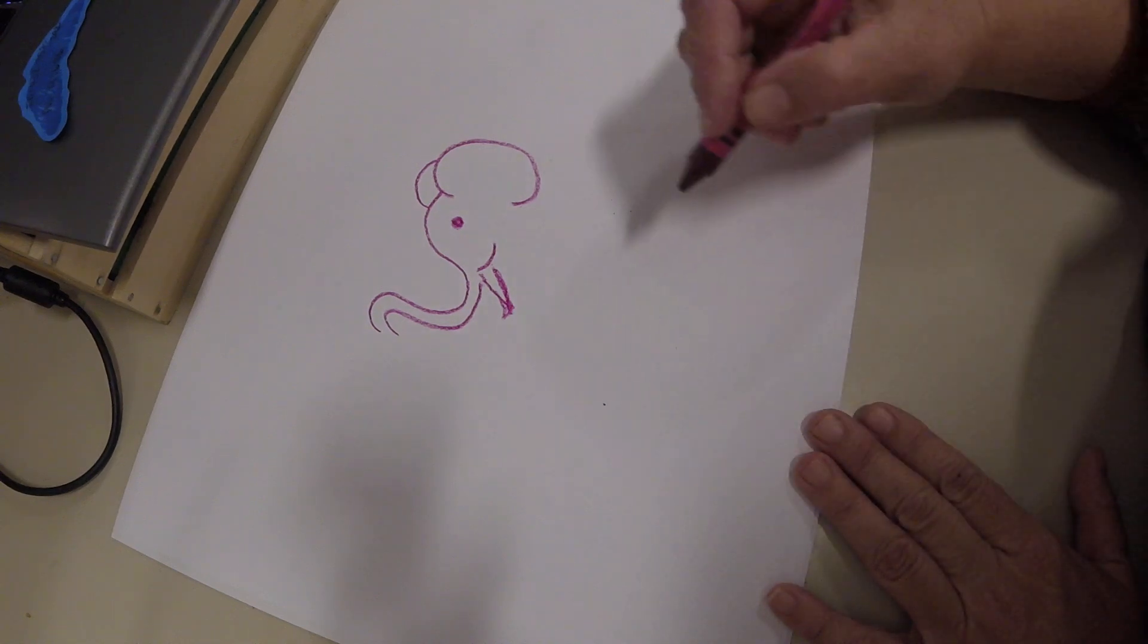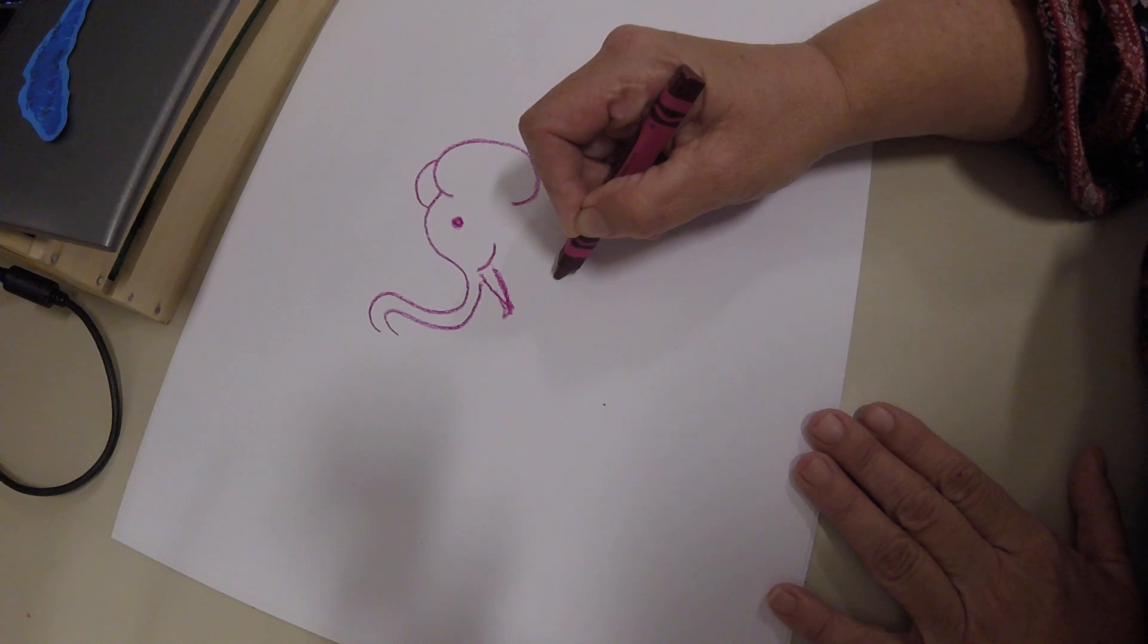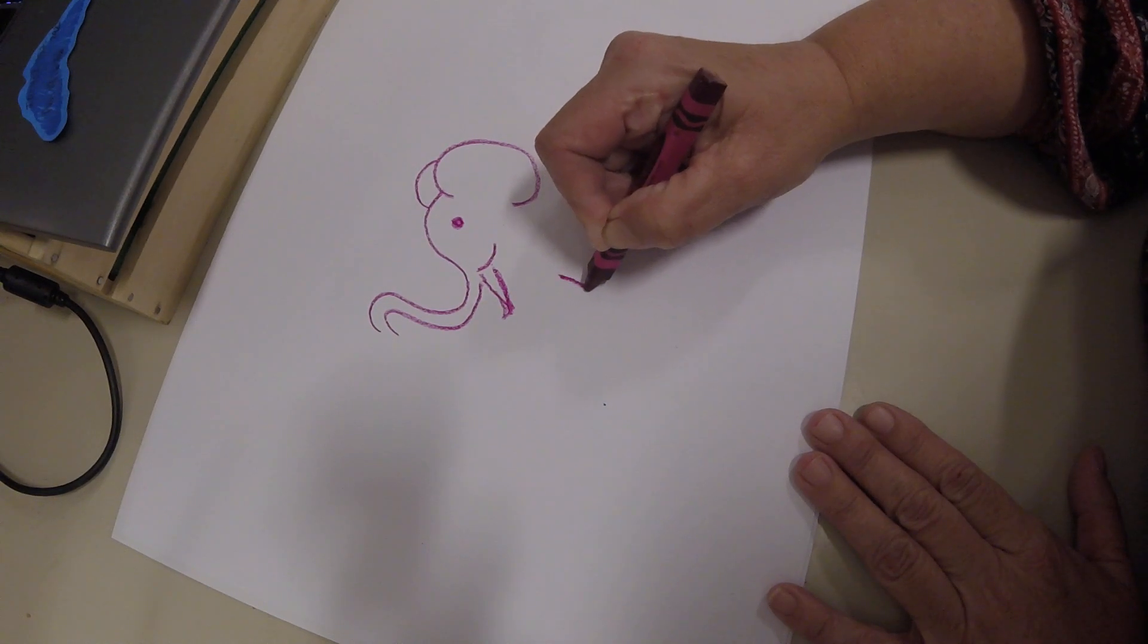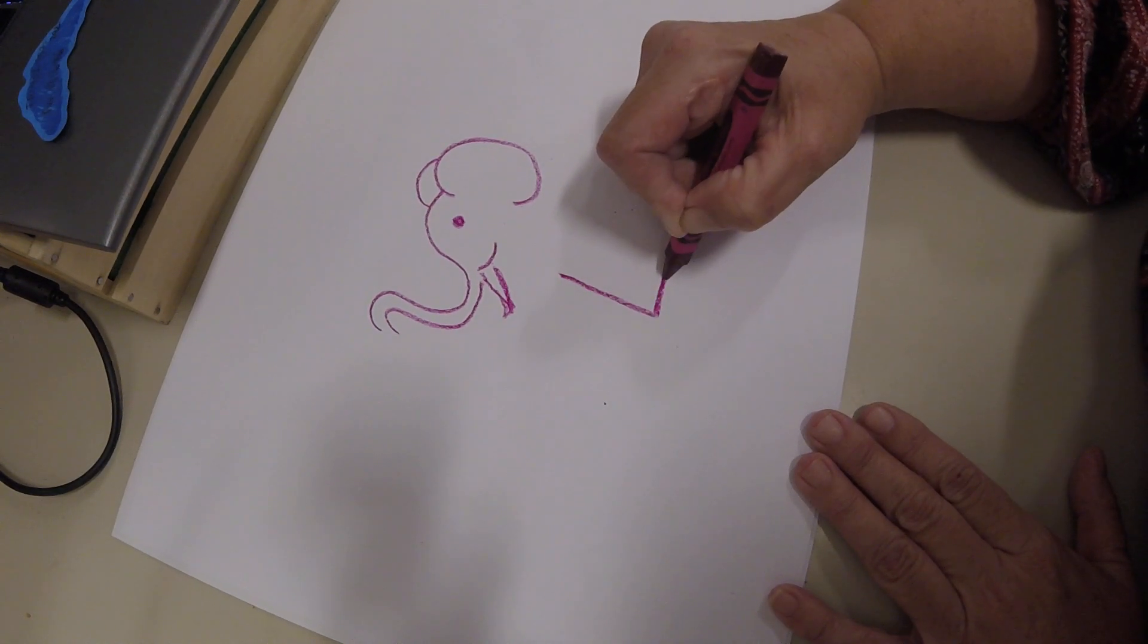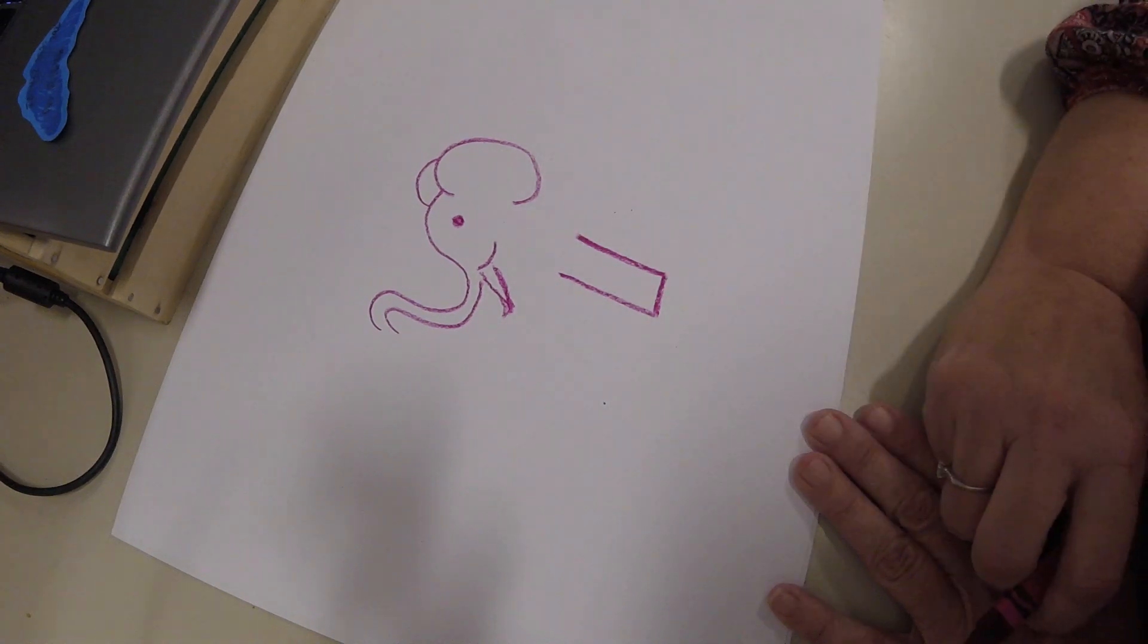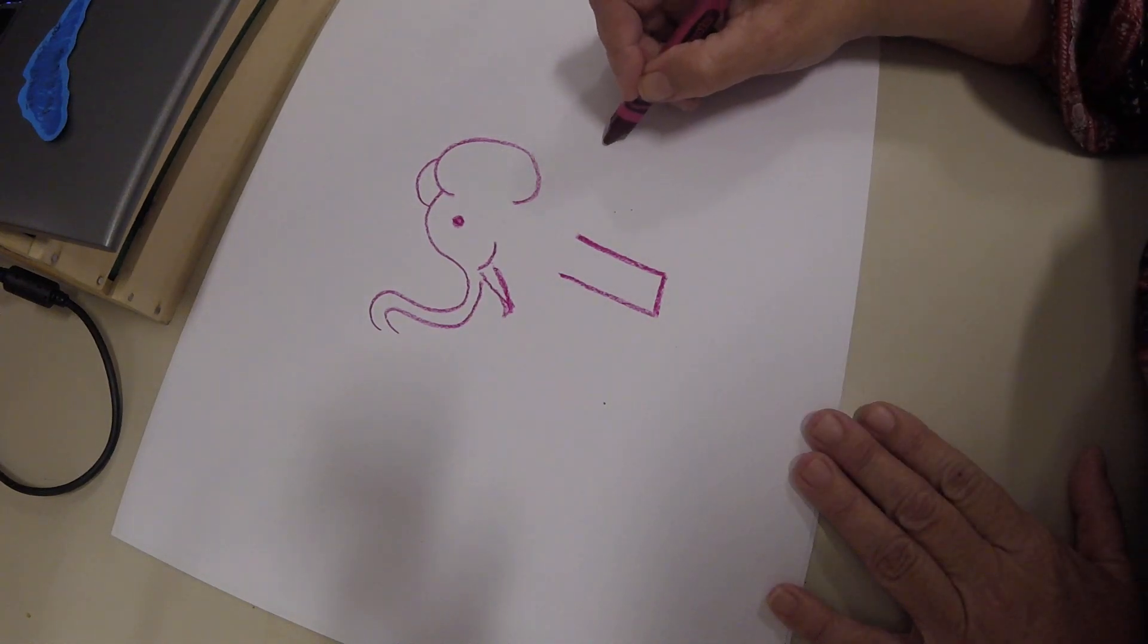Then we're going to add the legs, and that's just going to look like some rectangles that don't have a top line. So long line, short line, long line. I'm going to do it again back here but sort of tilt it out in the other direction. Long line, short line, long line.